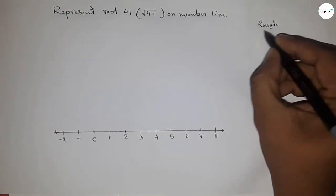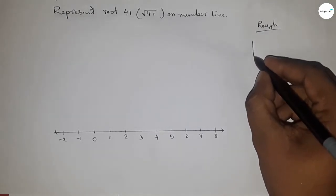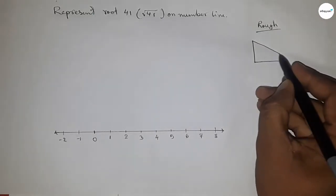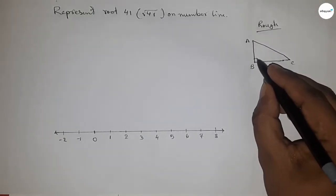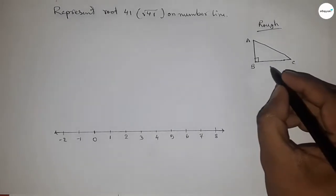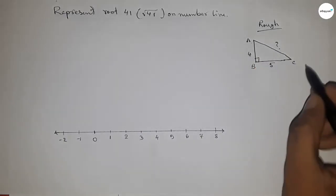Now, roughly discussing the calculation. If there is a right angle triangle ABC with base 5 units and height 4 units, then what is the hypotenuse? By Pythagoras theorem...